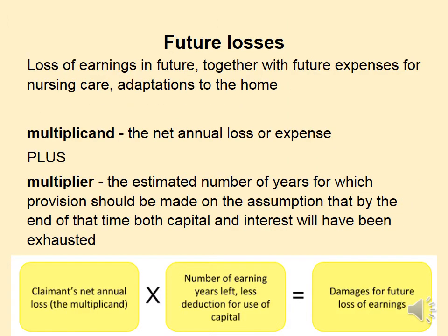Looking more at the multiplier and multiplicand: we know what the claimant's net annual loss is and how much they would have earned today, and we may be able to estimate the number of years they have left earning. The difficulty is that it's unlikely somebody will stay still in terms of the amount they earn each year, and we don't really know how many years they are going to earn for.